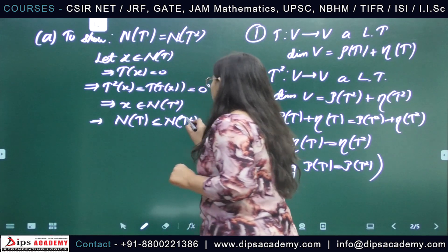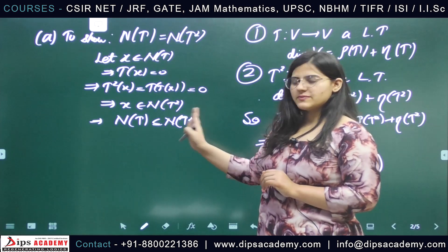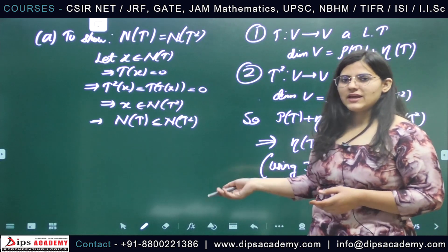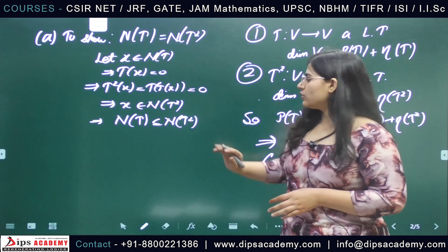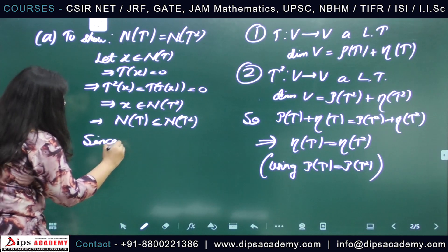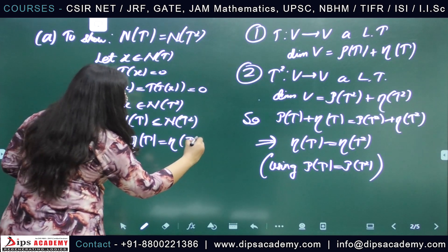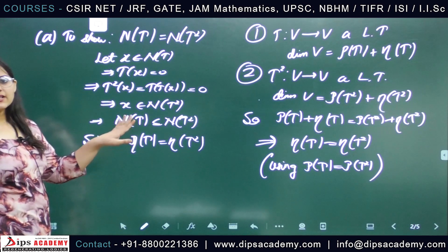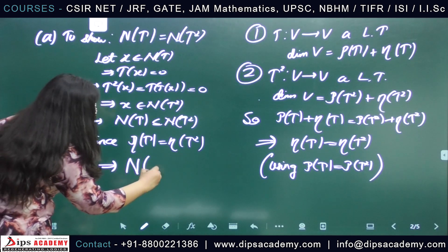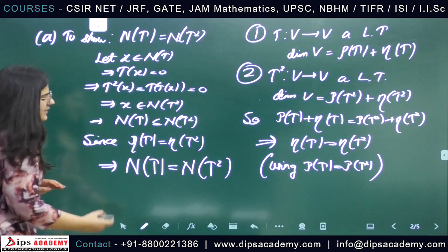Now, we have shown that null space of T is contained in null space of T squared, and the dimension of these two spaces is the same. Since one is contained in the other and they have equal dimension, these two spaces must be equal. Therefore null space of T equals null space of T squared, and option A is true.